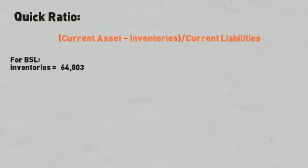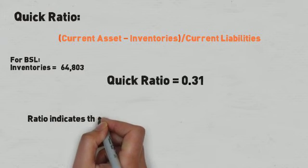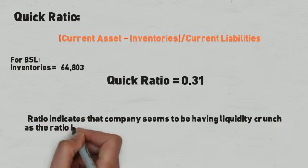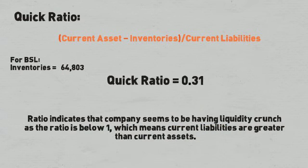For Bhushan Steel, Quick Ratio is 0.31. Liquidity Ratios indicate that the company is having a liquidity crunch as the ratio is below 1, which means Current Liabilities are greater than Current Assets.